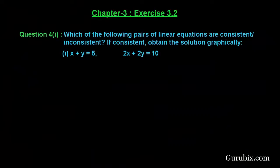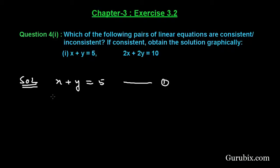Welcome friends. Let us solve the first part of question number 4 of exercise 3.2 of chapter 3. The question says: which of the following pairs of linear equations are consistent or inconsistent? If consistent, obtain the solution graphically. The given equations are: equation 1 is x plus y equals 5, and equation 2 is 2x plus 2y equals 10.